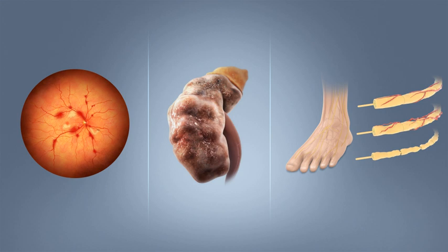Diabetes was one of the first diseases described, with an Egyptian manuscript from c. 1500 BCE mentioning 'too great emptying of the urine.' The Ebers papyrus includes a recommendation for a drink to take in such cases. The first described cases are believed to have been type 1 diabetes. Indian physicians around the same time identified the disease and classified it as madhumeha or honey urine. The term 'to pass through' was first used in 230 BCE by the Greek Apollonius of Memphis. The disease was considered rare during the time of the Roman Empire, with Galen commenting he had only seen two cases during his career, possibly due to the diet and lifestyle of the ancients.